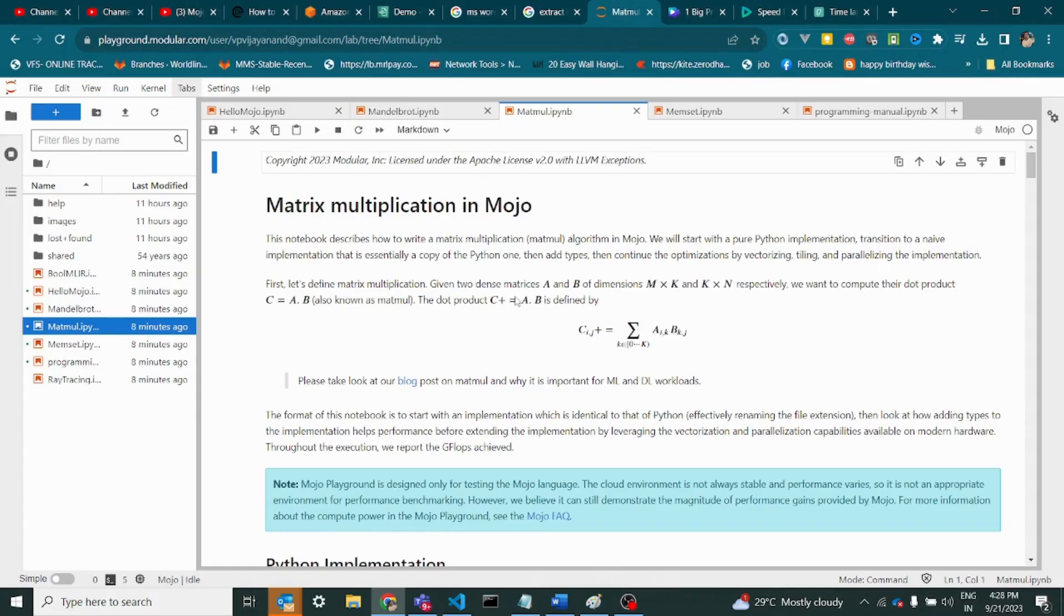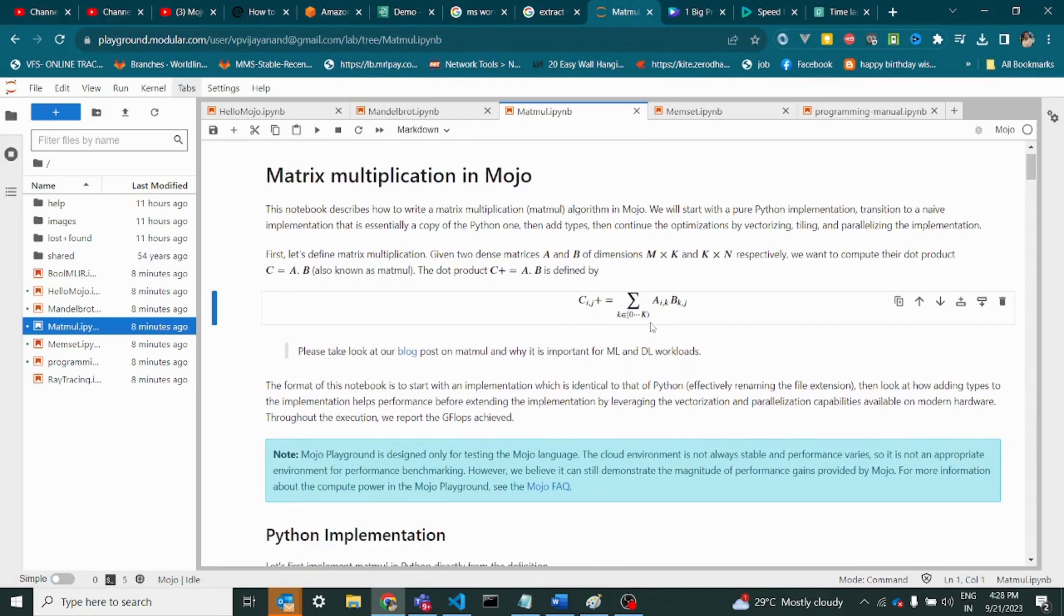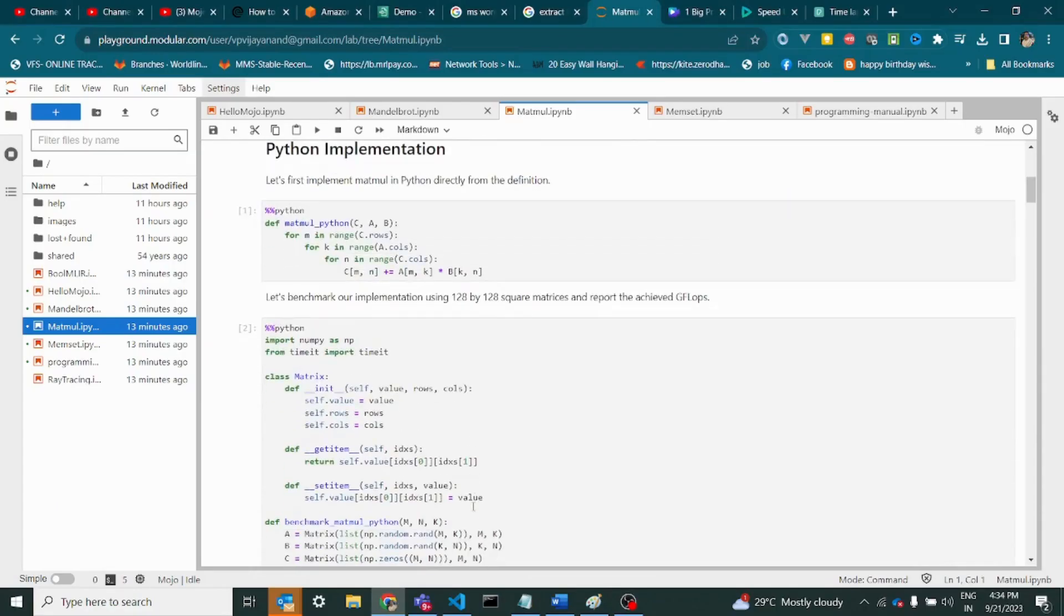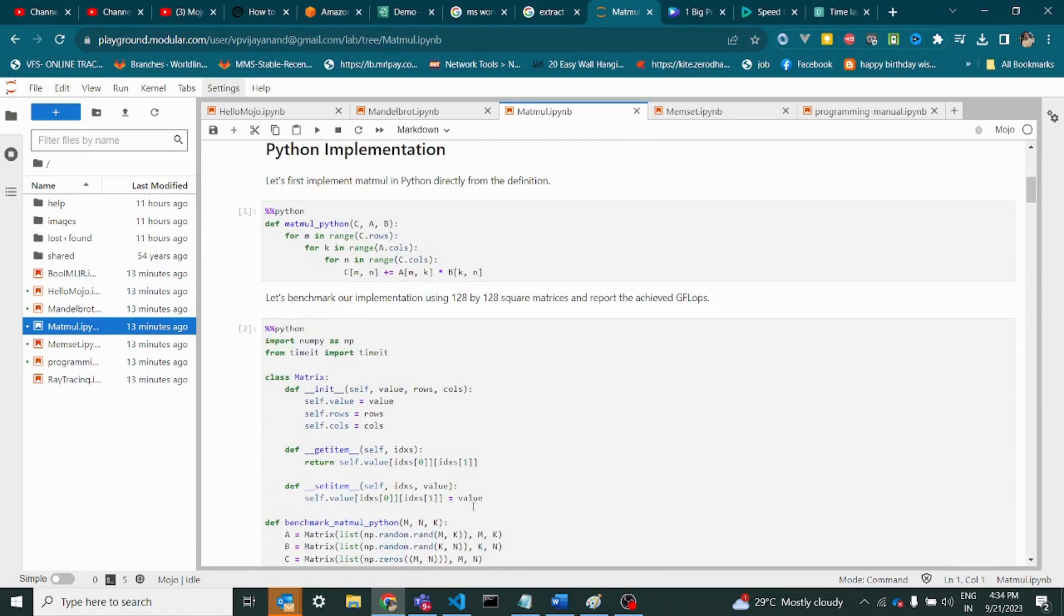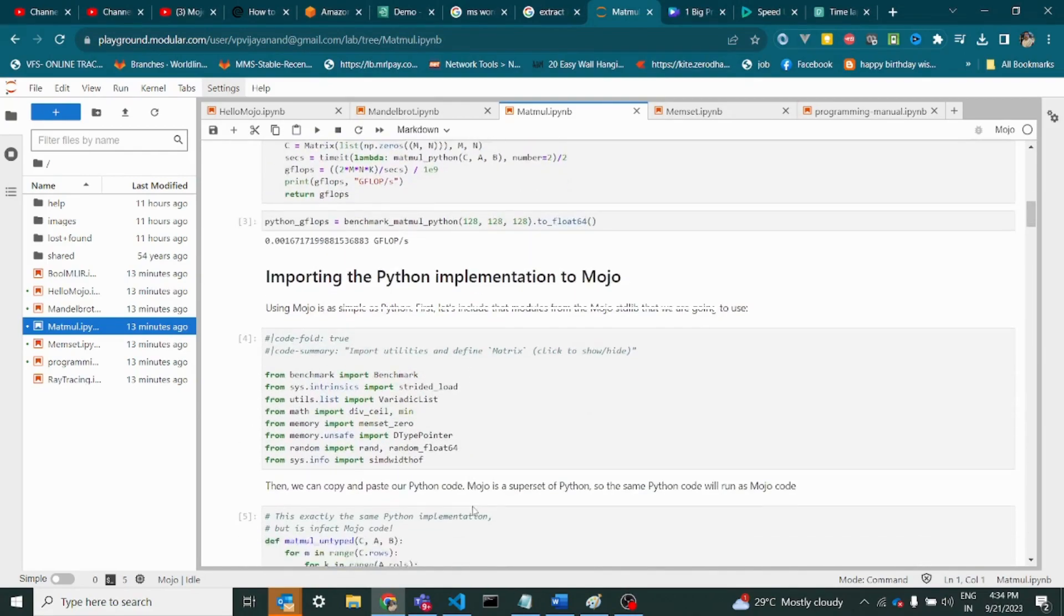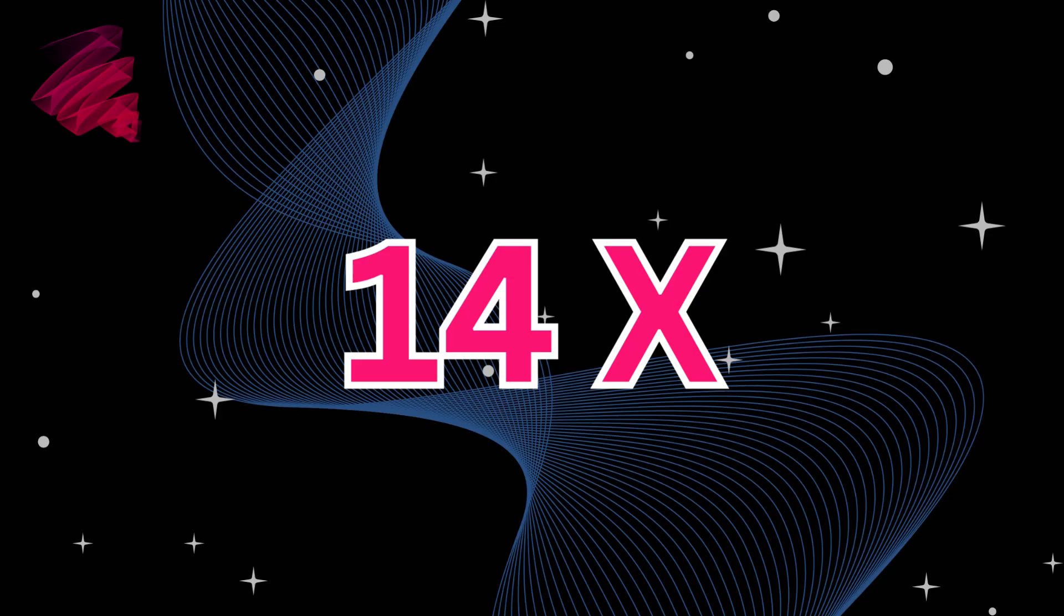We will now take a multiplication problem to demonstrate the speed of Mojo. When the Python implementation is just imported into Mojo, it runs 14 times faster. Come on, we have just started.